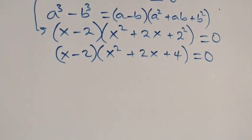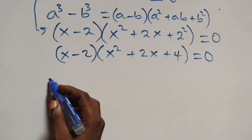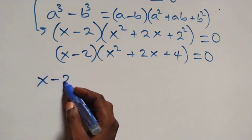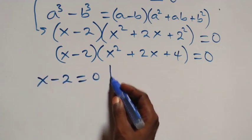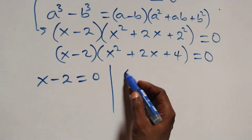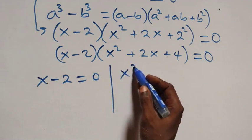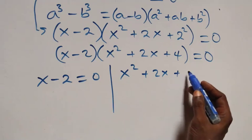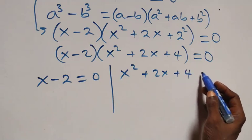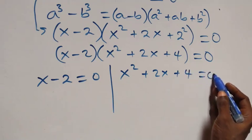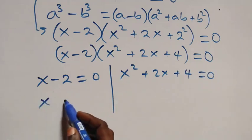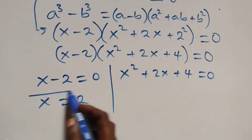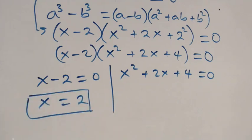From here we again have two cases. The first gives x minus 2 equals zero, or x² + 2x + 4 equals zero. From x minus 2 = 0, we get x equals 2, which is also a real solution.